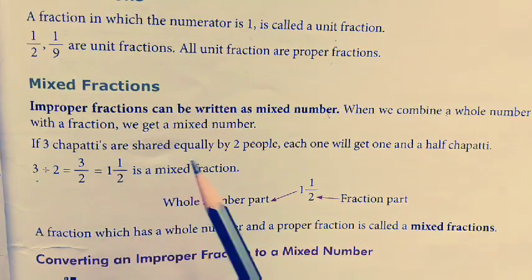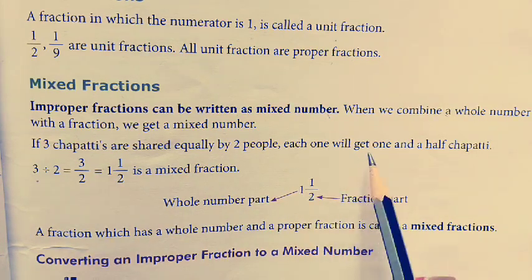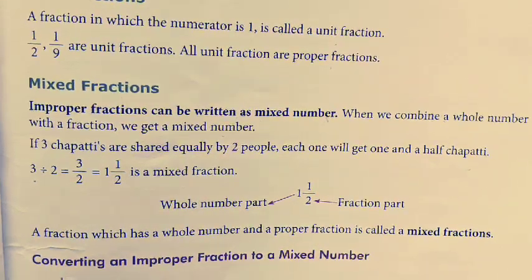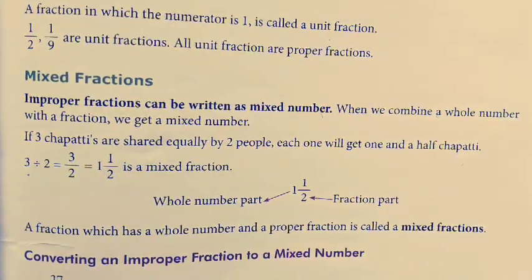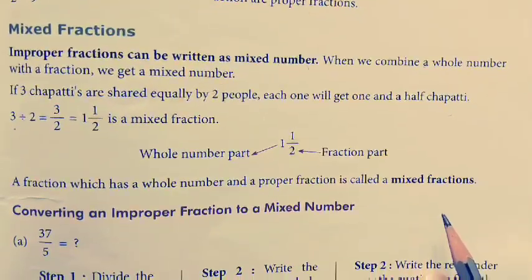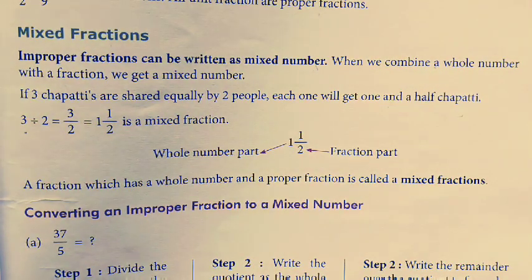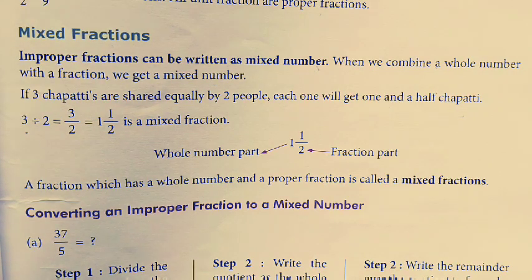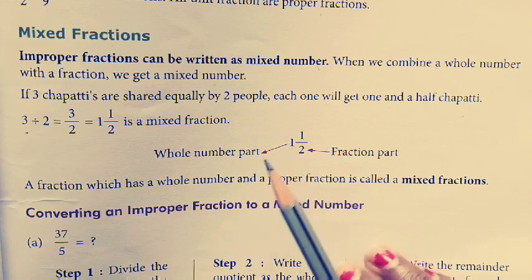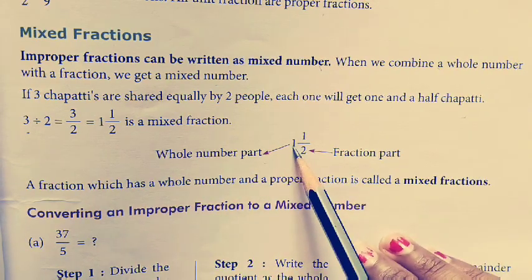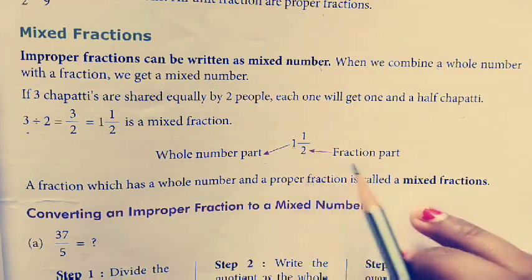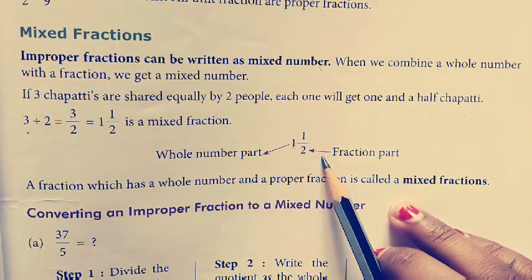So if three chapatis are shared equally by two people, each one will get one and a half chapatis. Teen rotiyaan hain, unhe equally divide karna hai. One chapati each to both equally, but one will be left over — so we divide that remaining one into half and share it. So the 'one' here is the whole number part, and 'one upon two' is the fraction part. Jab hum inhe ek saath likhte hain, to ye kahlata hai mixed fraction.